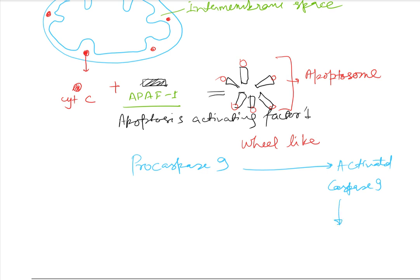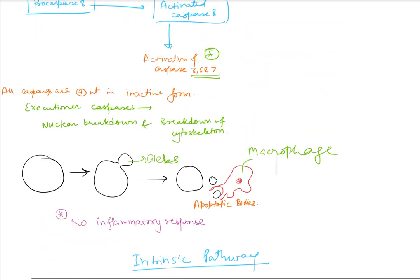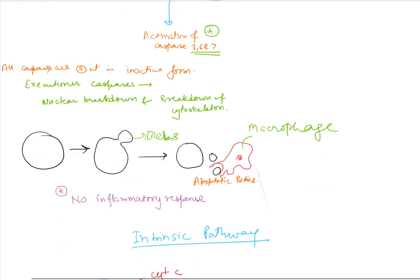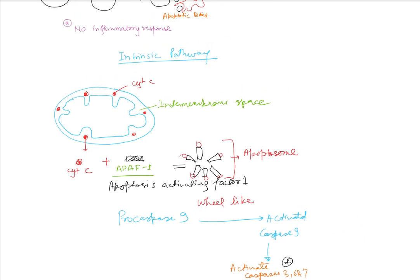This activated caspase 9 will further activate caspases 3, 6, and 7 — the executioner caspases — and the same apoptotic response mediated by caspases takes place. Because this intrinsic pathway involves the mitochondria, it is also known as the mitochondrial pathway.